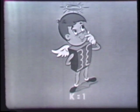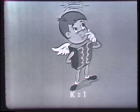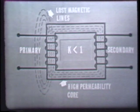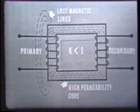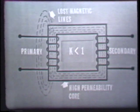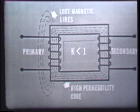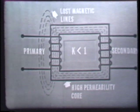The coefficient of coupling for an ideal transformer is also 1. However, even with high permeability iron cores, a few of the magnetic lines fail to cut the secondary and are, in effect, lost. This prevents the coefficient of coupling from ever being exactly unity — or 1 — in a practical transformer. It should be pointed out, however, that a coefficient of coupling of 0.98 is possible between the coils of a well-designed transformer.